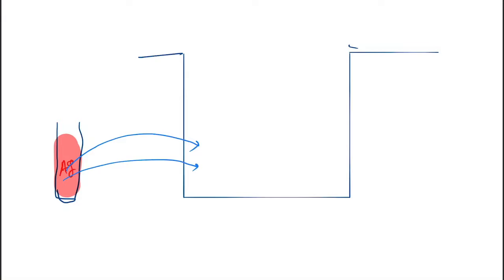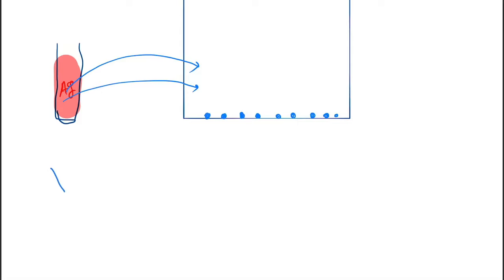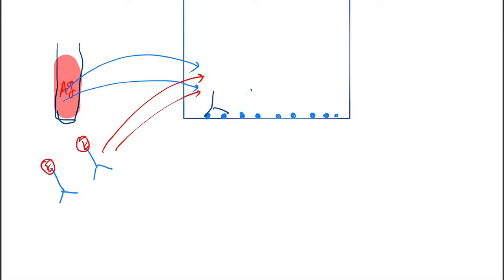In Direct ELISA, we take serum containing antigen. The antigen comes and binds to the surface of the well. The remaining unbound antigen is removed by the washing process, so only the surface-attached antigen remains. Next, we add antibodies containing an enzyme, and these antibodies come and bind to the antigens.